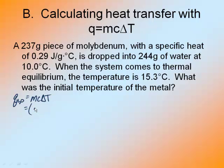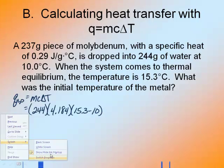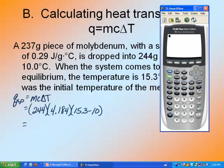I know my water is 244 grams, I know the specific heat of water is 4.184, and I know the change of temperature is final 15.3 minus initial 10. 244 times 4.184 times 5.3, because 15.3 minus 10 is 5.3, is 5410.75.